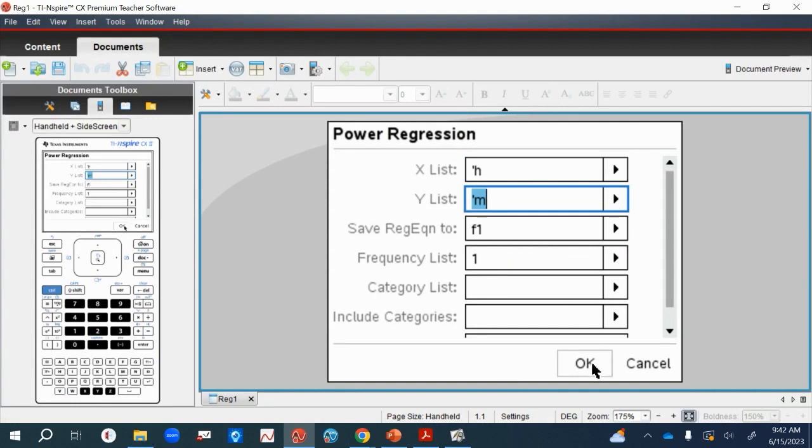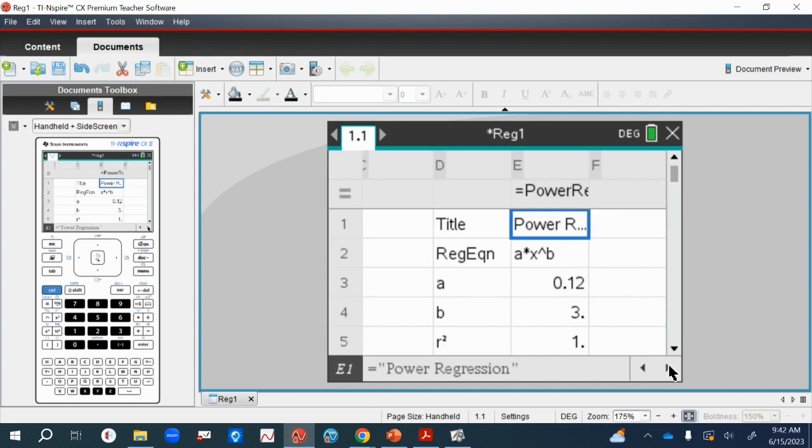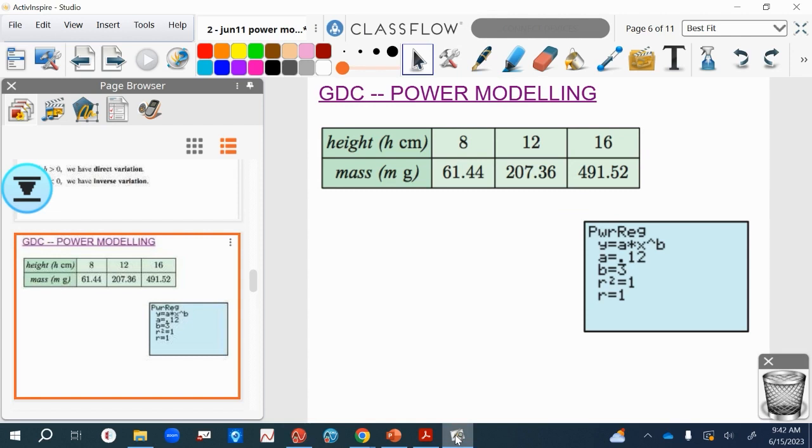So x is h, so let's make sure we get this right. X is h, so y is the other one, which is m. And then you just click there. You don't click on anything else. So hopefully these will match up.